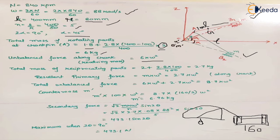The total mass of the reciprocating parts is the piston mass 2 kg, plus the portion of the connecting rod at the gudgeon pin: 2.8 × (100/400). This comes out to 2.7 kilogram. So the resultant primary force due to the reciprocating parts is 2.7rω² along the crank direction.